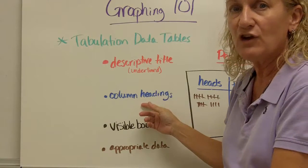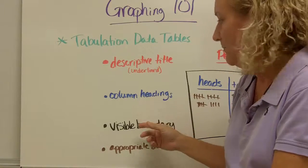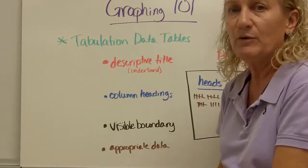Second is column headings. Each of your columns need to have a heading so we know what the information underneath is all about. Third, a visible boundary. I need to see a box around it. And finally, appropriate data.